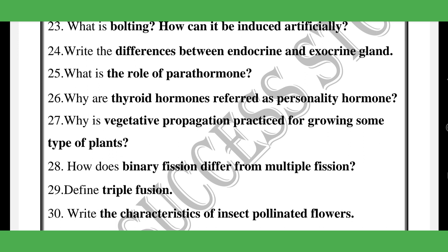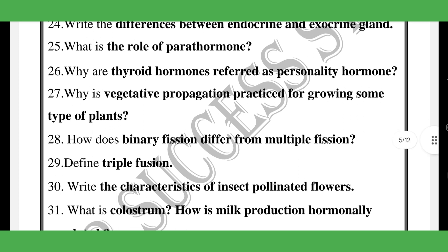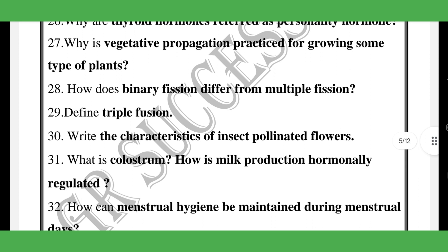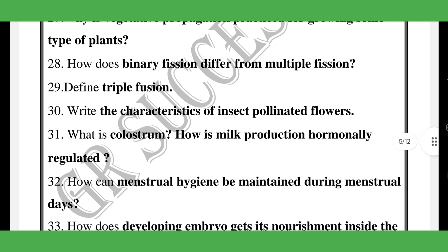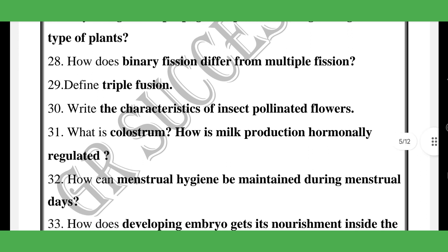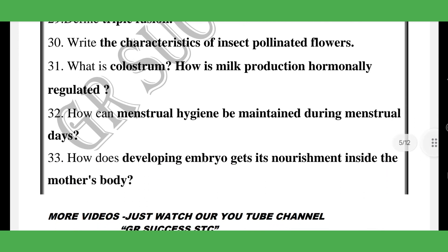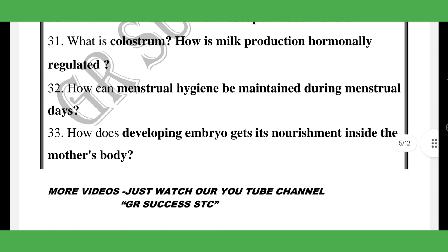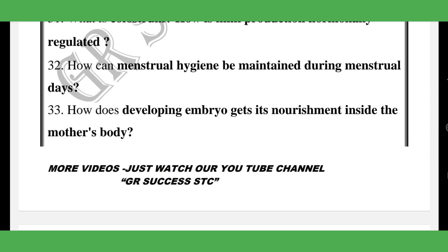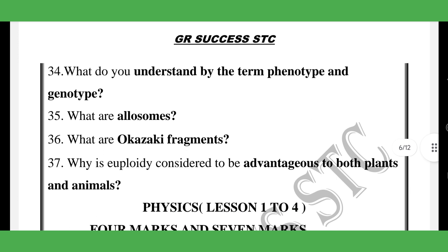Next: vegetative propagation — methods for growing certain types of plants. Binary fission vs. multiple fission — differentiate. Difference between triple fusion and fertilization. Characteristics of insect-pollinated flowers. Menstrual cycle: what is maintained during the menstrual days. Phenotype and genotype, allosome.